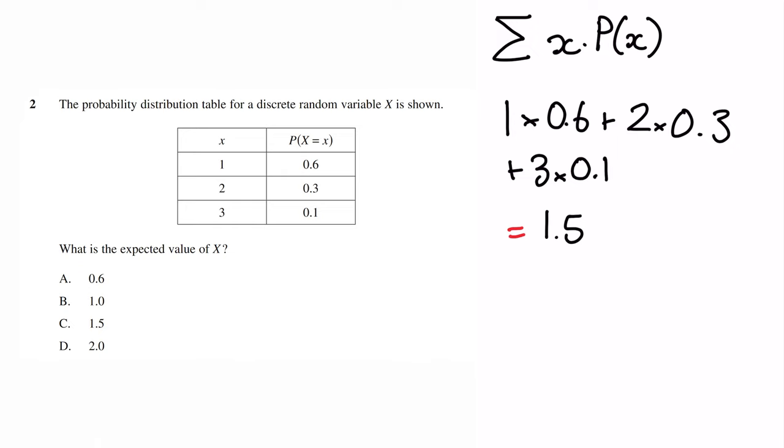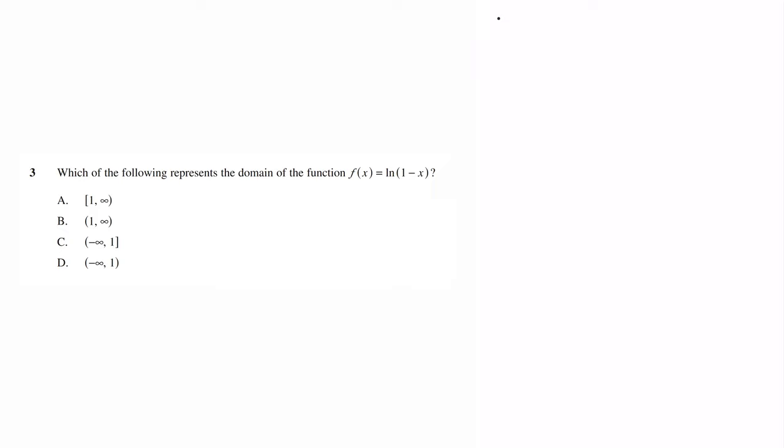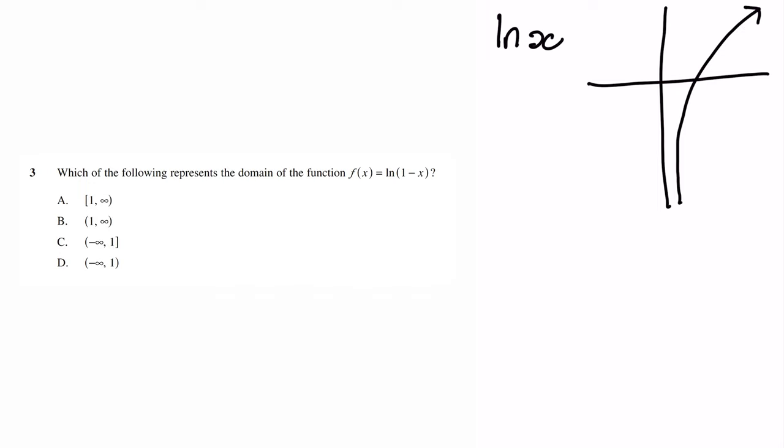When thinking about the domain of functions, the first thing I do is consider the domain without any transformations. In this case, I'm thinking about what is the domain of ln(x) normally. Recall that ln(x) has an asymptote at x equals 0, so x must be greater than 0. Now if I think about ln(1 minus x), we've introduced a negative x and added 1.